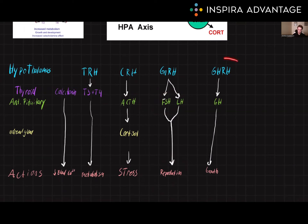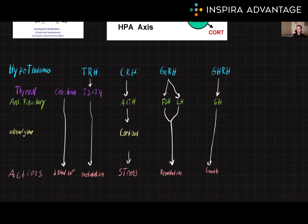Finally, we have growth hormone-releasing hormone, GHRH. This is a hypothalamic hormone that regulates the release of growth hormone from the anterior pituitary. GHRH is involved in the regulation of growth and cellular reproduction. It also regulates the metabolism of carbohydrates, lipids, and proteins.